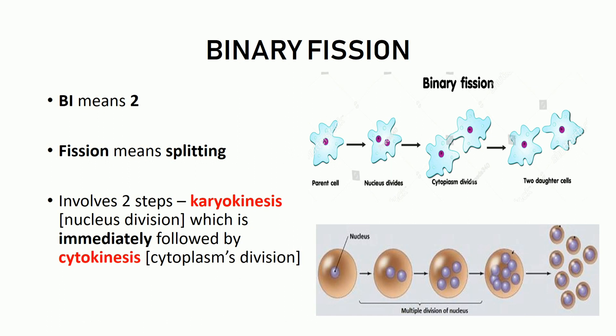Whenever a cell division occurs, there are two steps which are carried out. The first step is karyokinesis and the second step is cytokinesis. Karyokinesis — 'karyon' means nucleus and 'kinesis' means division — so it's a division of the nucleus. Cytokinesis means the division of cytoplasm. The nucleus first divides, this is followed by the division of cytoplasm, and this results in the formation of two daughter cells — this is what happens in binary fission.